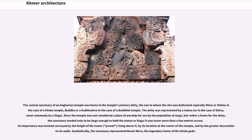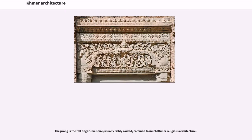The sanctuary's importance was instead conveyed by the height of the tower rising above it, by its location at the center of the temple, and by the greater decoration of its walls. Symbolically, the sanctuary represented Mount Meru, the legendary home of the Hindu gods. The prang is the tall, finger-like spire, usually richly carved, common to much Khmer religious architecture.